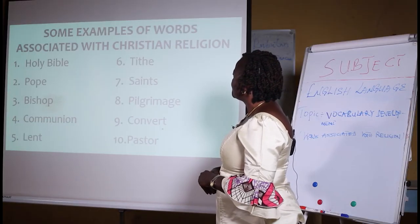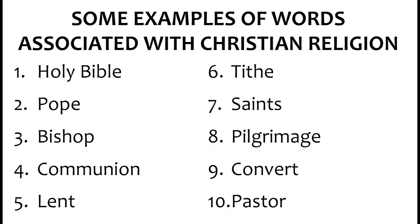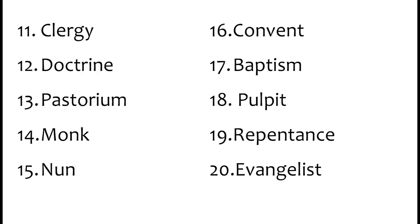Words associated with Christian religion include: one — Holy Bible; two — Pope; three — Bishop; four — Communion; five — Lent; six — Tithe; seven — Saints; eight — Pilgrimage; nine — Convert; ten — Pastor; eleven — Clergy; twelve — Doctrine; thirteen — Pastoreum; fourteen — Monk; fifteen — Nun; sixteen — Convent; seventeen — Baptism; eighteen — Pulpit; nineteen — Repentance; twenty — Evangelist.